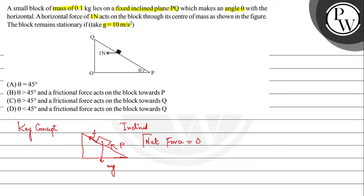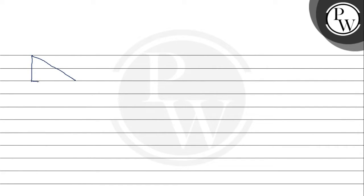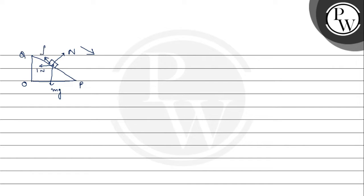The net force on the system shall be equal to 0. Now let us see the question. In the question, we have a body with the vertices of the inclined plane Q, O and P, and there is a body on which a 1 Newton force is acting in this direction. This will be the weight component acting downwards and this will be the component of normal reaction. If it is sliding downwards under the force of gravity, then friction will be acting upwards in this case.